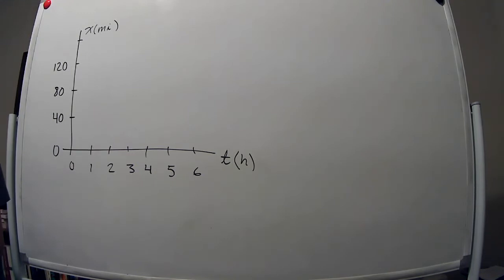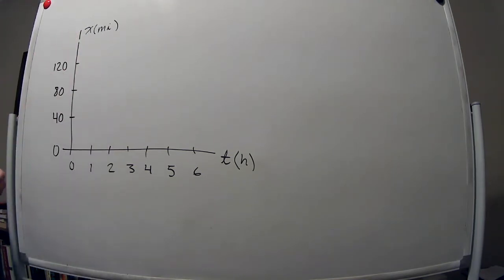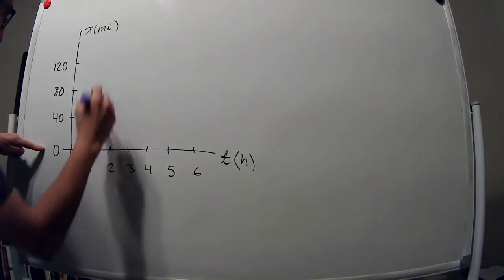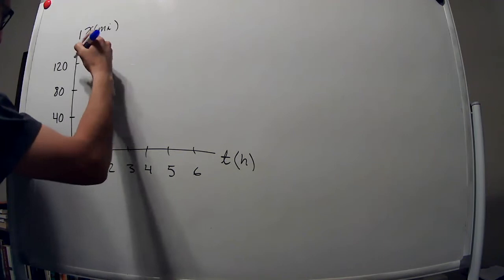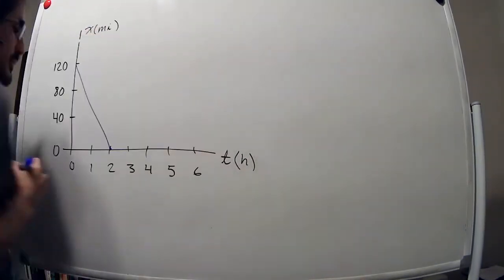And the plot, so it's a straight line from 120 to zero in two hours. So it looks like that.